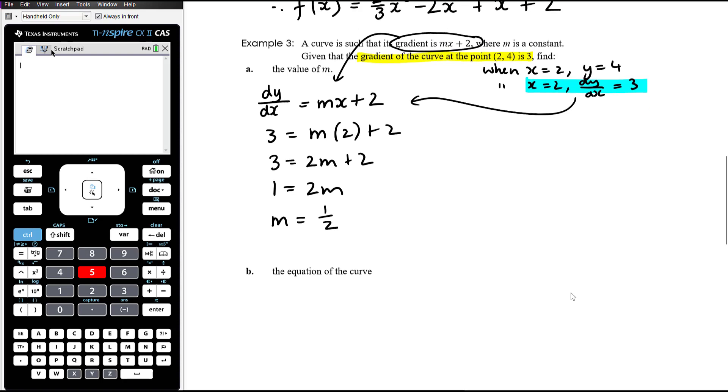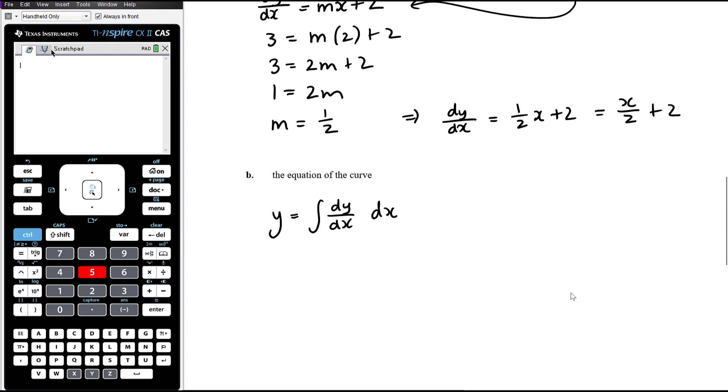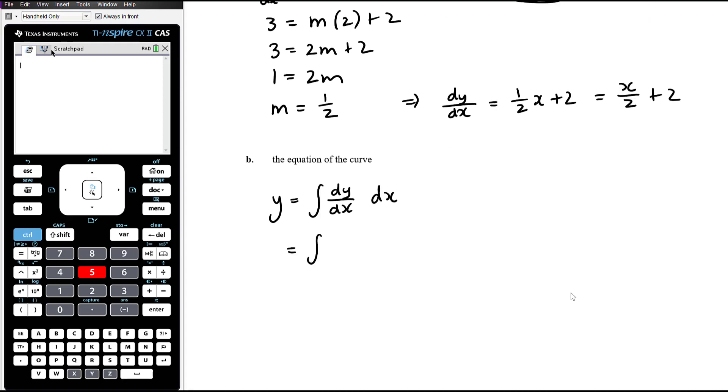Okay, so that means that the derivative is 1 half x plus 2, or we could write that as x on 2 plus 2. However you prefer to think about that, same thing. So then we want to find the equation of the curve, so we want to find y. So we know that y is the anti-derivative of the derivative. So that is the anti-derivative of half x plus 2 with respect to x. Don't forget your dx's.